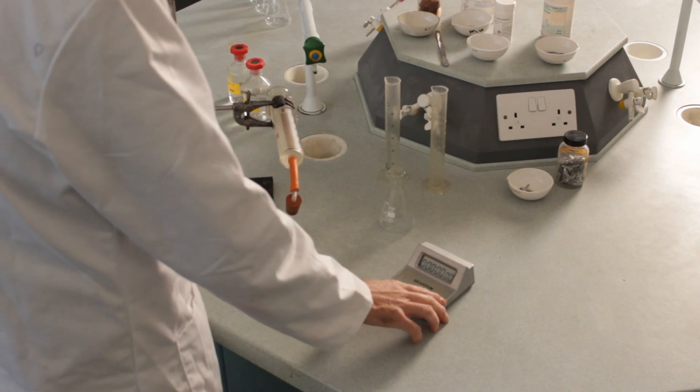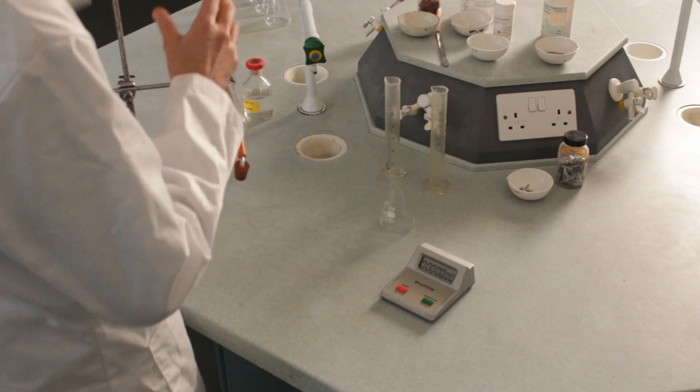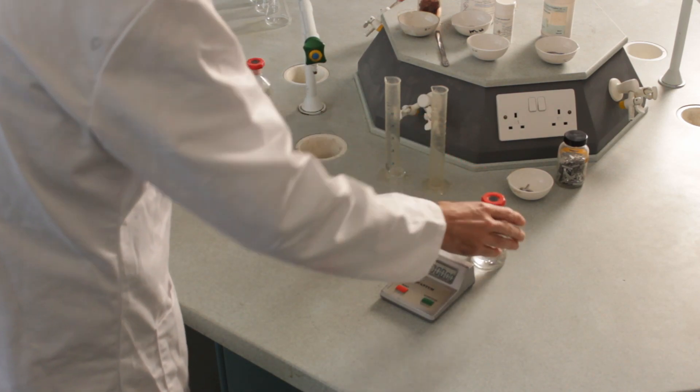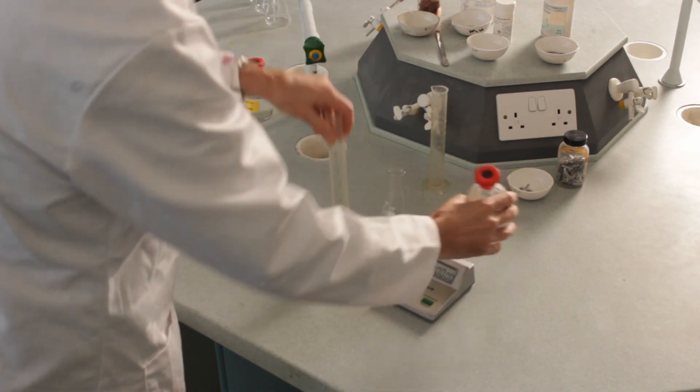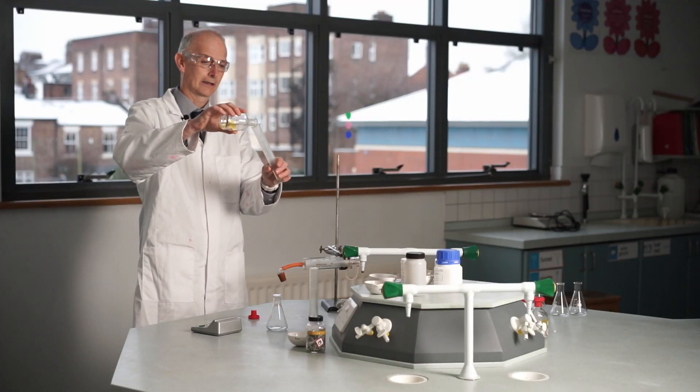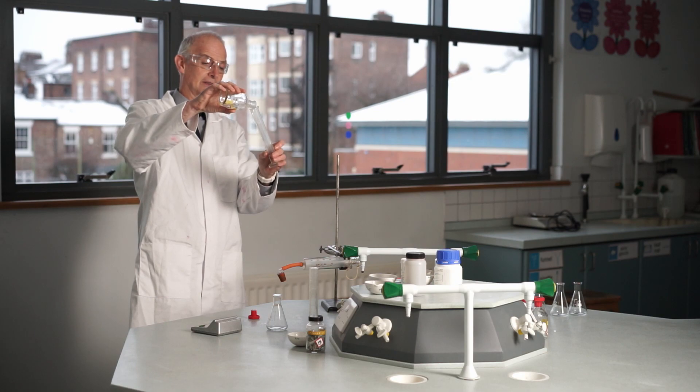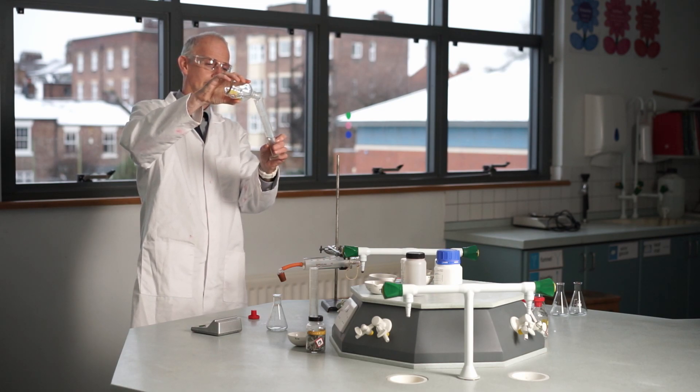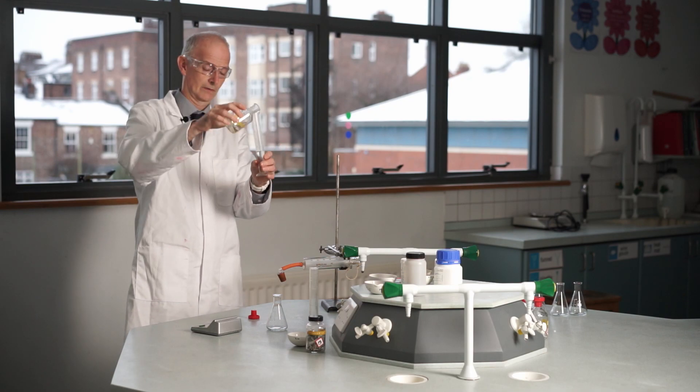And the acid I'm using is hydrochloric acid. And I'm going to be using 25 centimeters cubed of hydrochloric acid. So I can pour this out with the measuring cylinders. So it's basically half a measuring cylinder.